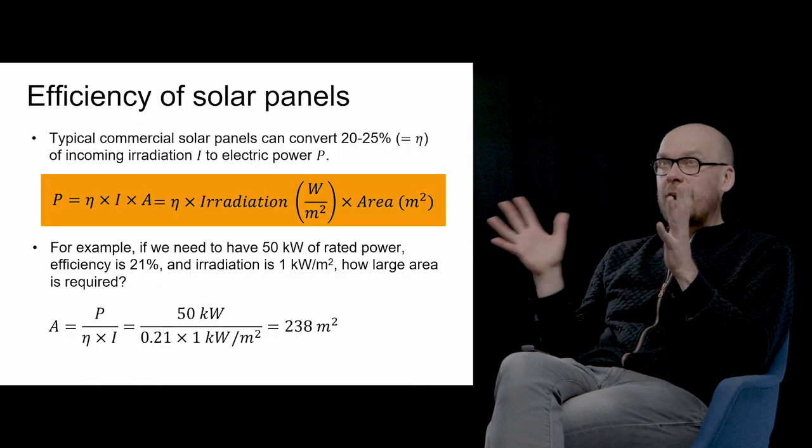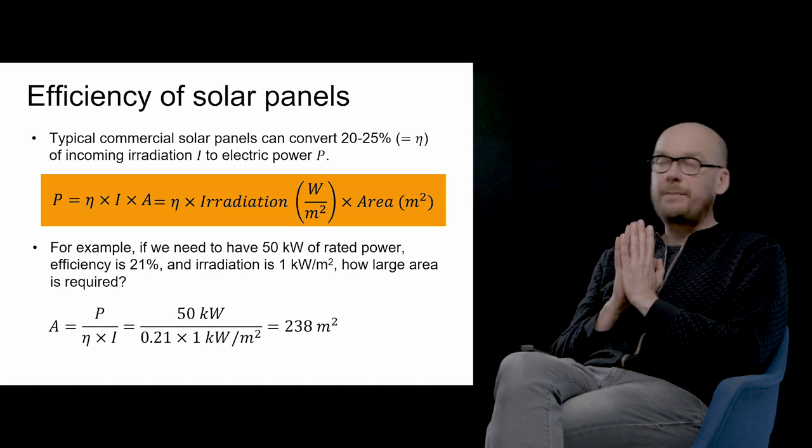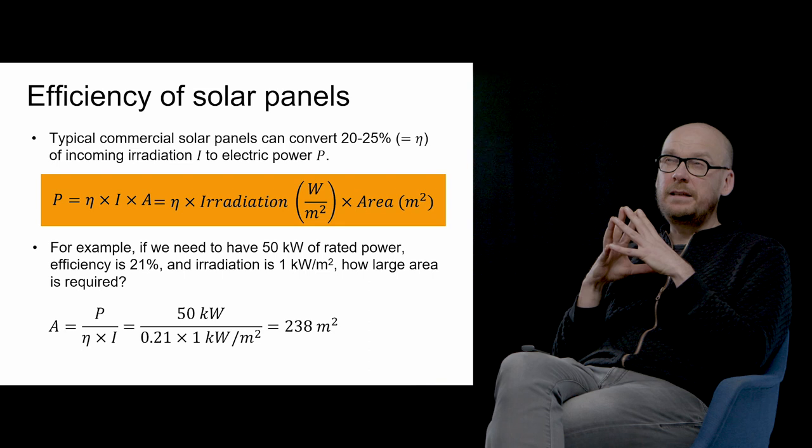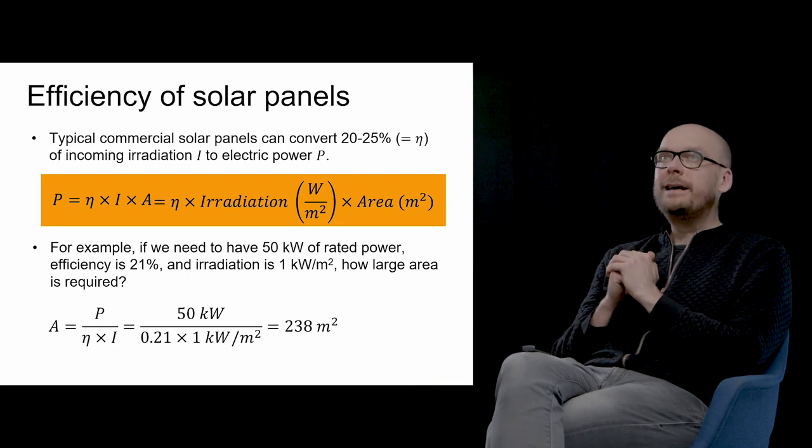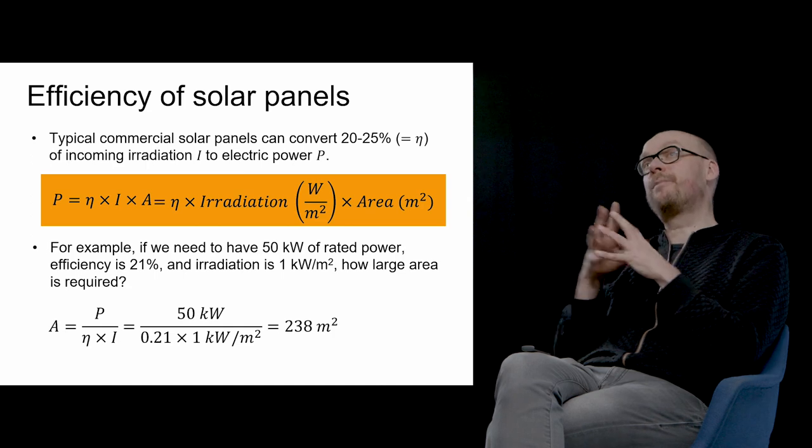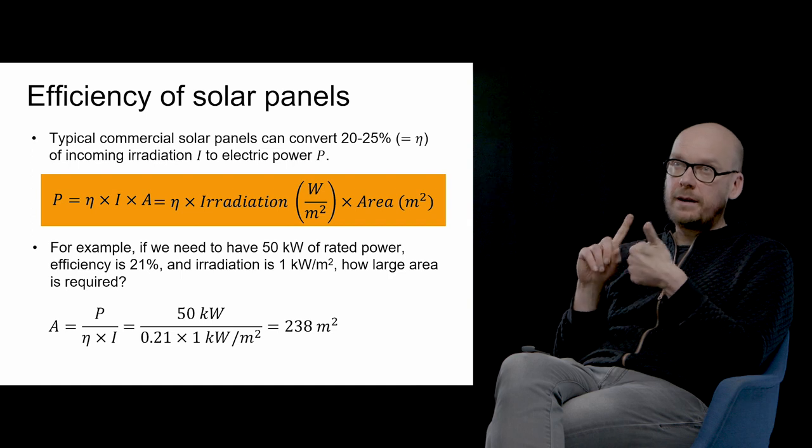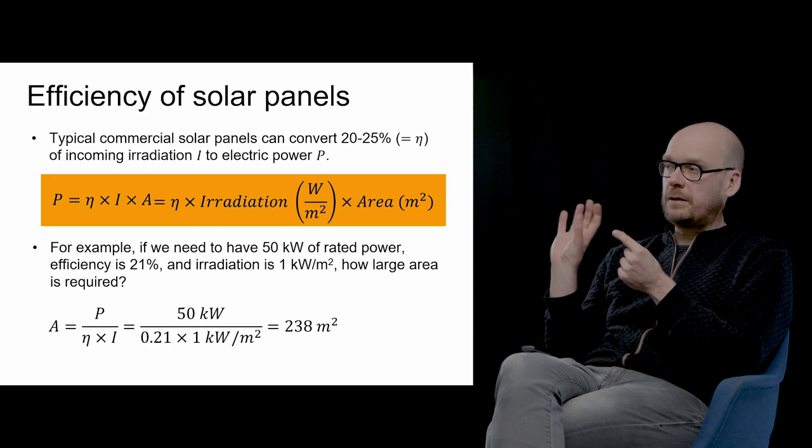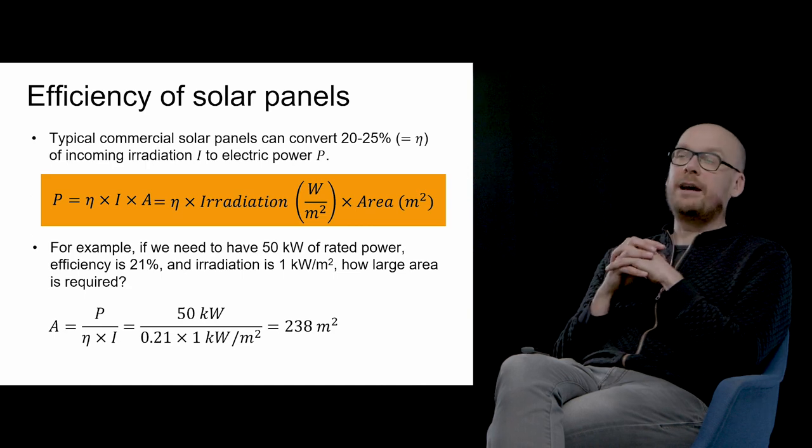About solar panels, how to calculate the power simply: typical commercial solar panels nowadays have efficiency of 20 to 25%, this is the eta symbol. They can convert this fraction of the irradiation to electric power P. Simply you can calculate the power as P = η × I × A, efficiency times the irradiation times the area of the panel.